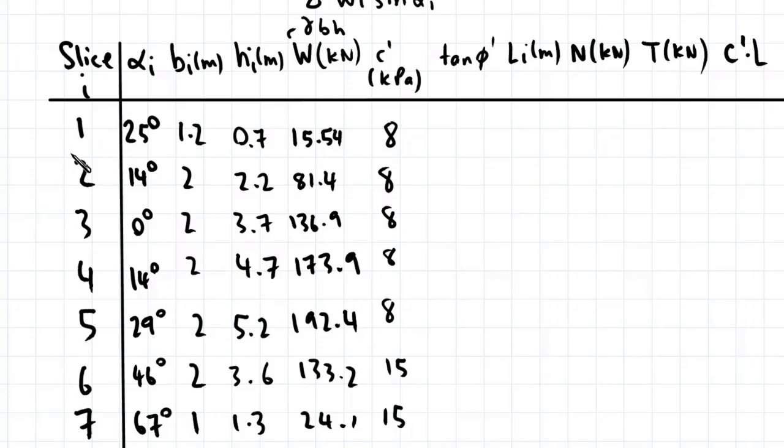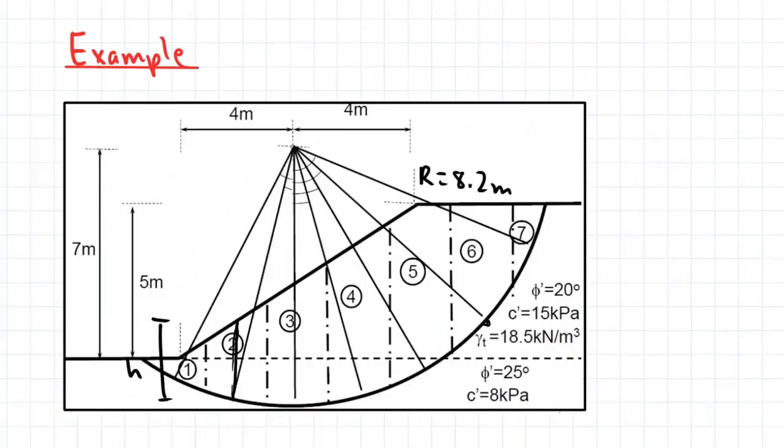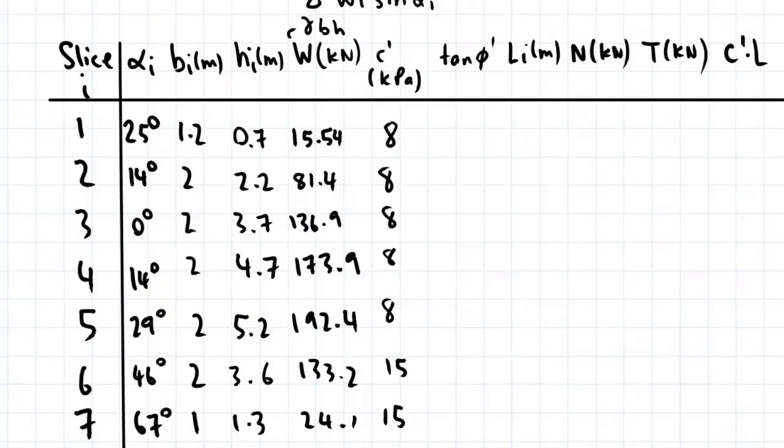And tan phi. Tan phi is a similar story. So look at which layer the bases of the slices fall in and use that respective angle of friction. So this works out to be 0.466. I'll just write in the rest.